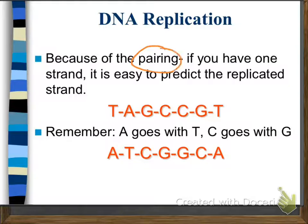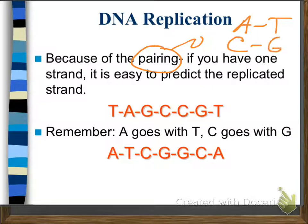Because of the base pairing relationships — adenine always goes with thymine, cytosine always goes with guanine — we should always be able to pair up given half of the DNA strand.